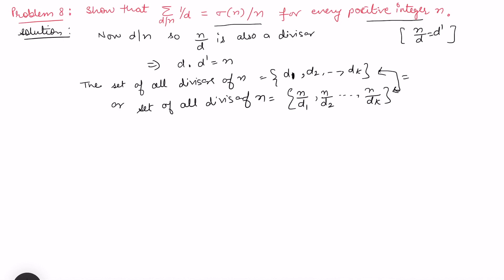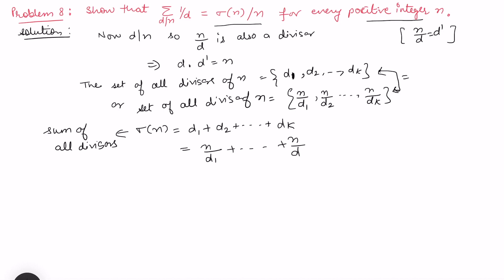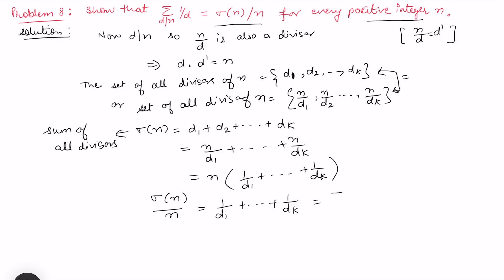So σ(n), which is the sum of all divisors, equals d₁ + d₂ + ... + d_k, which is nothing but n/d₁ + ... + n/d_k. Taking n common, this becomes n times (1/d₁ + ... + 1/d_k). Therefore σ(n)/n equals 1/d₁ + ... + 1/d_k, which is the expression written as the sum of reciprocals of divisors where d divides n.